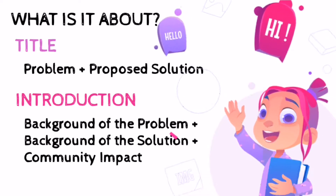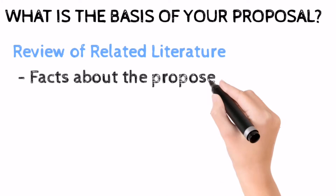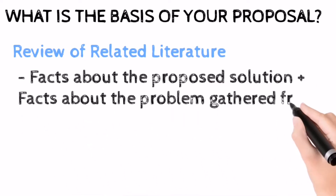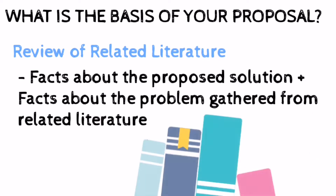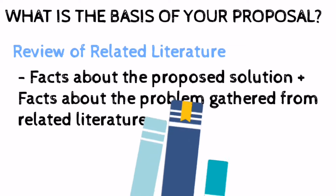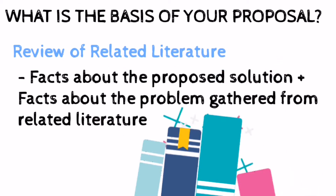What is the basis of your proposal? The review of related literature should be able to answer this question. The RRL consists of facts about the proposed solution and facts about the problem. It is important to cite references in the RRL because this part provides the basis for the feasibility of your proposal. For example, if you want to use powdered eggshell as a proposed solution to rice spoilage, you need to read the latest scientific journals to gather more information and compare and contrast their findings so that you can use them for your topic.